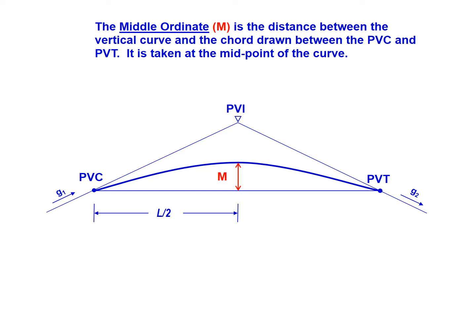It's also true that it's going to happen at a distance L over 2. The PVI for vertical curves, when we're looking at a symmetric parabolic curve, is always halfway between the PVC and the PVT.